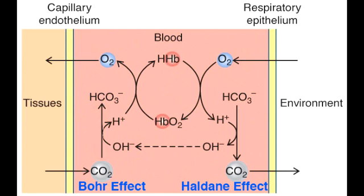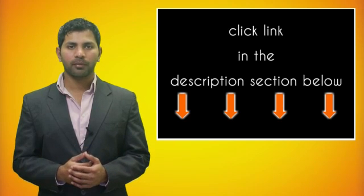What is the Bohr effect? The Bohr effect occurs in peripheral tissue. When tissue requires more oxygen, there is a high amount of carbon dioxide and hydrogen in that area, signaling that it requires more oxygen. In response, hemoglobin delivers and unloads oxygen for uptake by the tissue. Remember: the Haldane effect gets carbon dioxide out to the environment, whereas the Bohr effect gets oxygen into the tissue.